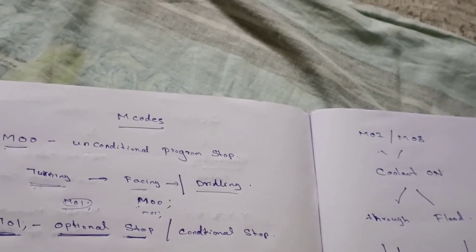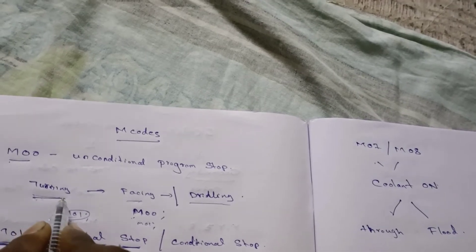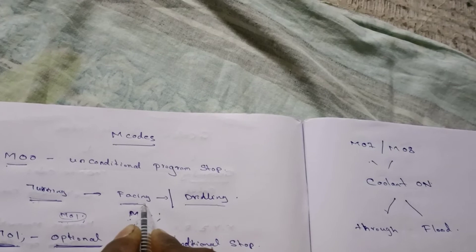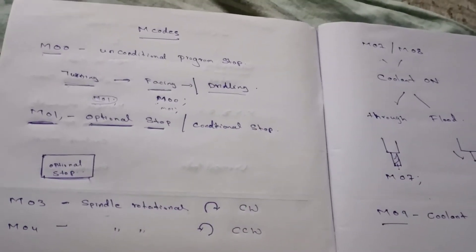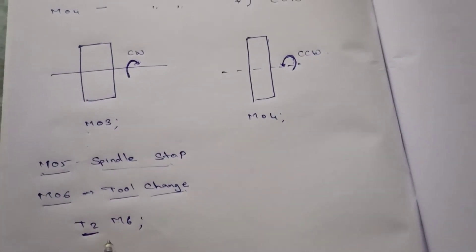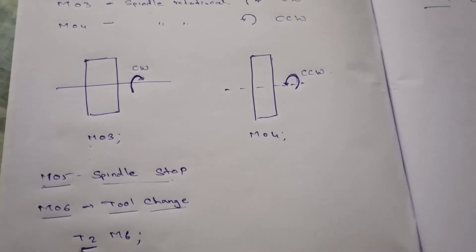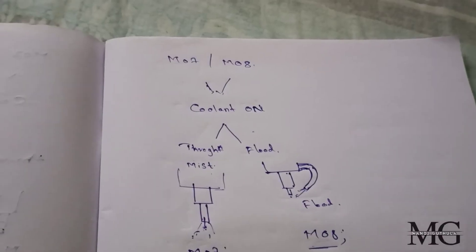When one operation is completed, then we need to call second tool. So for calling this second tool, it means tool changing. When you use, after tool number, M6, it indicates tool change. The tool should be changed.